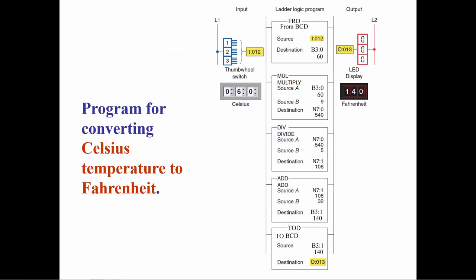This ladder logic program will convert a thumbwheel switch input representing a temperature reading in Celsius to a LED display of the Fahrenheit equivalent. The mathematical conversion requires multiplying the Celsius value by 9, dividing by 5, and adding 32 to the result.